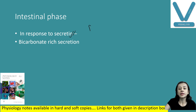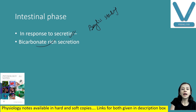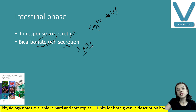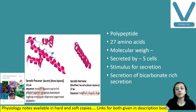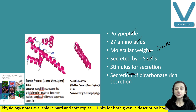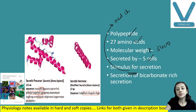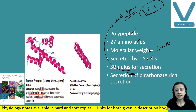The intestinal phase is the main phase, in response to secretin. Secretin was the first hormone discovered by Bayliss and Starling. It increases secretion of bicarbonate-rich pancreatic juice to neutralize the acidity of chyme — the mixture of food and gastric secretion. Because gastric secretion is highly acidic, this acidity is neutralized by the bicarbonate-rich secretion. Secretin is a polypeptide having 27 amino acids, with a molecular weight of about 3,400, secreted by S cells of the mucosa of the duodenum and jejunum. The stimulus for secretion is acidic chyme at pH 4.5–5 entering the duodenum.